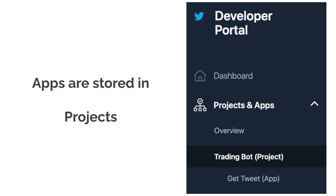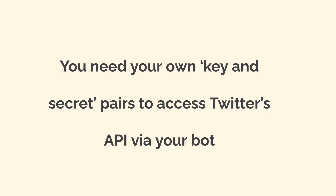Once your application has been approved, you'll be able to access the developer portal via your Twitter account. Here you can create projects and apps — you're setting them up, not actually building them via the portal. For every app, you're going to have a set of a key and a secret, unique to your app, and these are the way your app can actually access the API. Inside projects and apps, create a new project, and in there you can also create apps per project. You'll need your own unique key and secret pairs to access Twitter's API via your bot, and these shouldn't be shared.